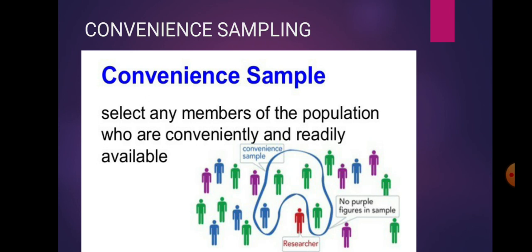This is also called haphazard and accidental sampling. This method is based on using people who are a captive audience, who just happen to be walking by or show a special interest in your research. The use of volunteers is an example of convenience sampling. When you ask for volunteers and they come forward, you can include them in the sampling. That is convenience sampling.